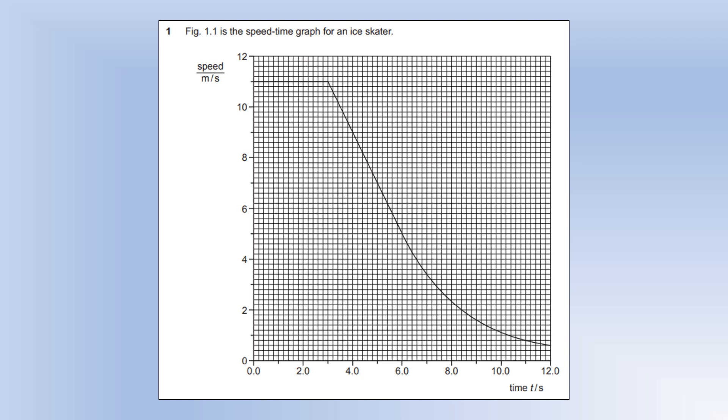In this video we're going to look at the 2017 IGCSE paper 4, the longer answer paper. We're going to start off with a speed-time graph for an ice skater. We've got them going at constant speed of 11 metres per second for the first 3 seconds, and then their speed is decreasing up until 12 seconds.